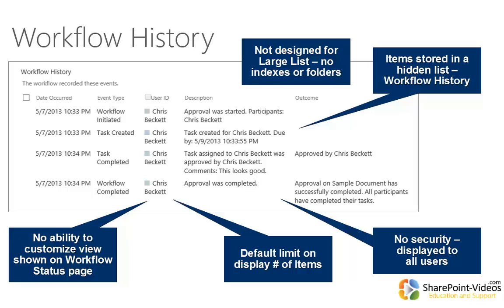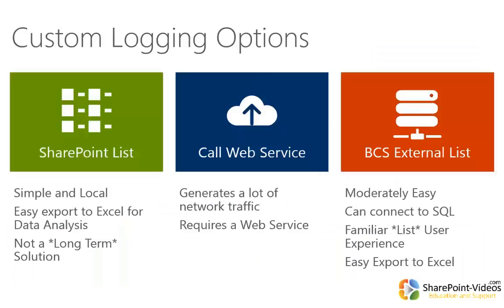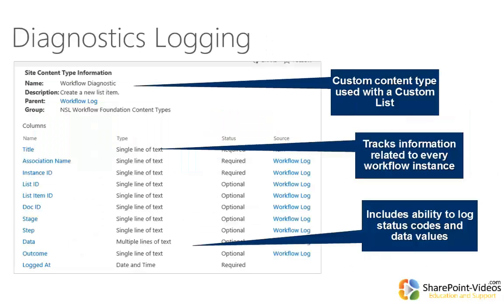The long and the short of it is: we really need to think about three different ways for logging three different kinds of workflow status. For diagnostics and performance audit logging, similar to configuration, we've got three choices: a custom SharePoint list, pushing information out by calling a web service, or using a BCS external list connected to a relational database or web service. All three are good choices. In the sample workflow we're building, we'll be using a custom SharePoint list.